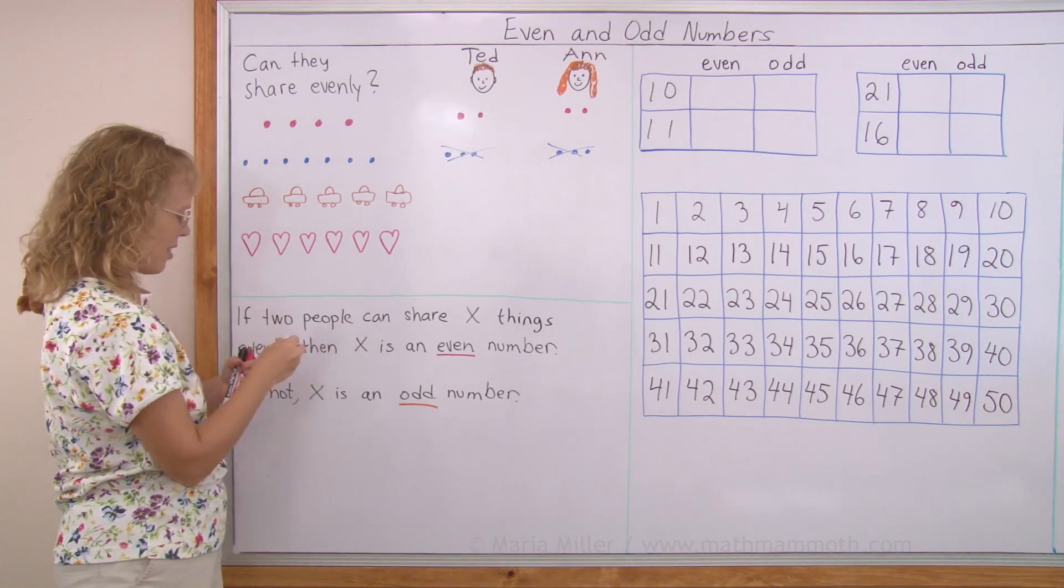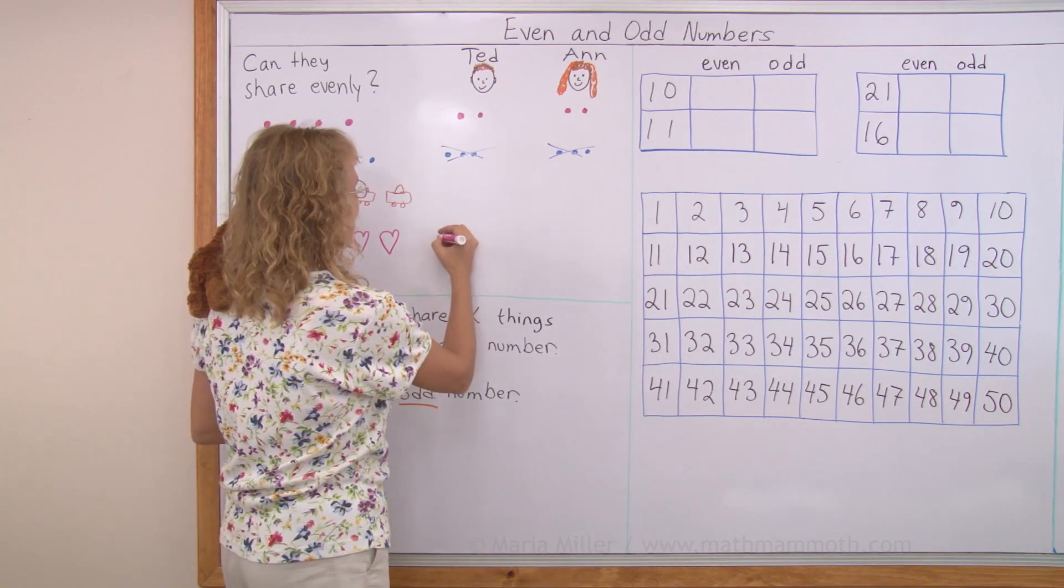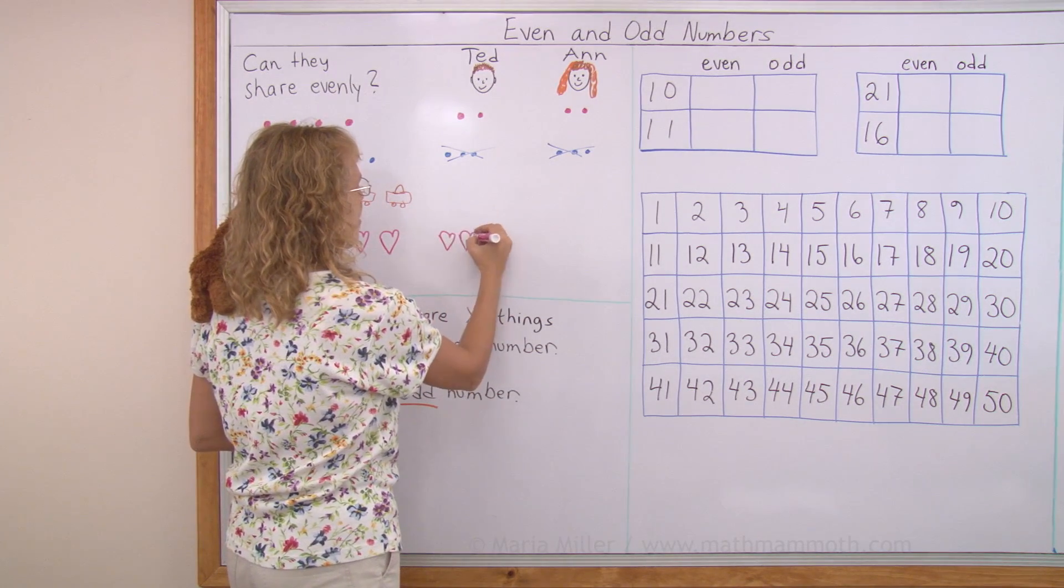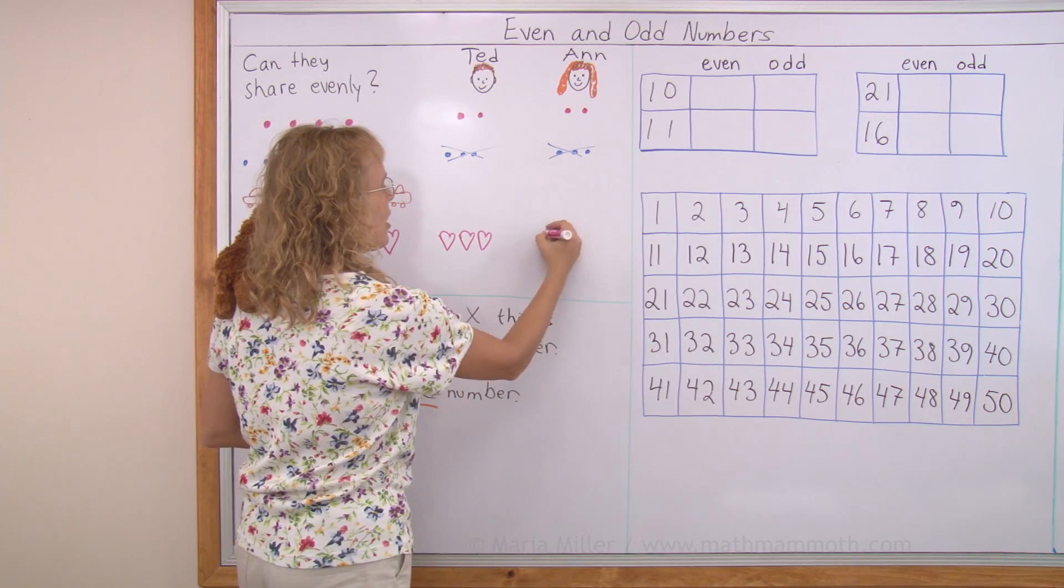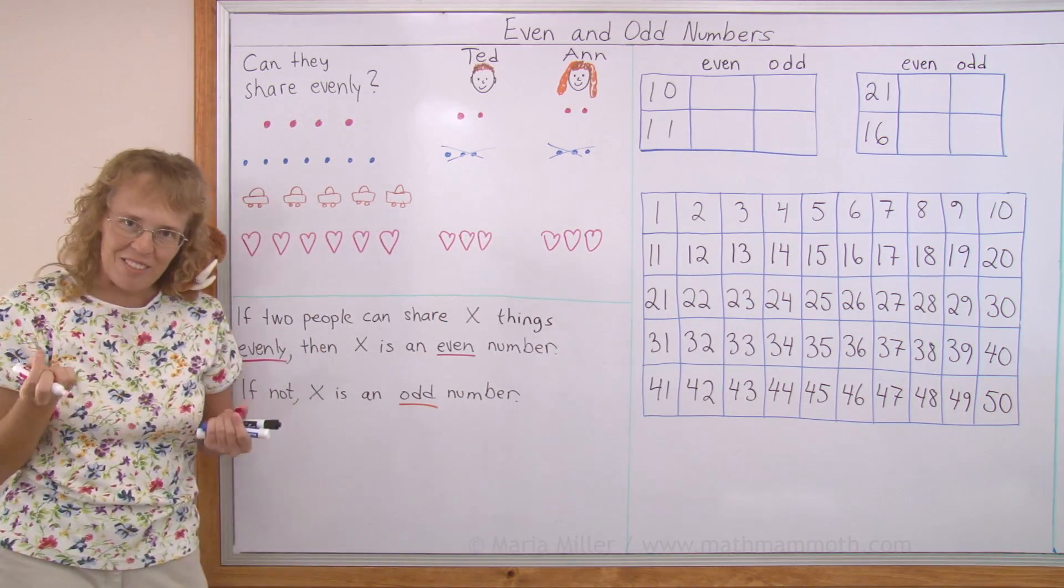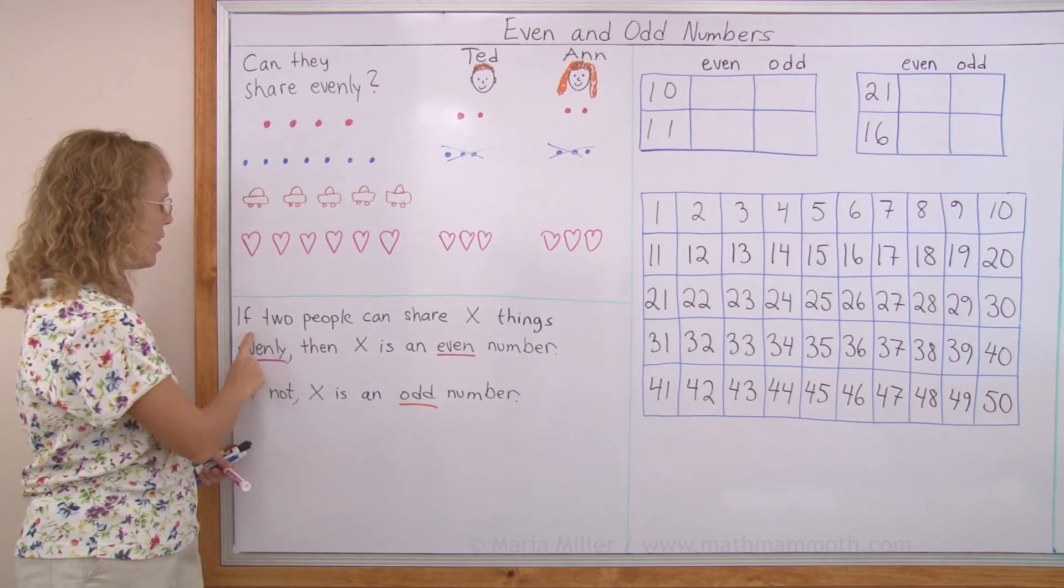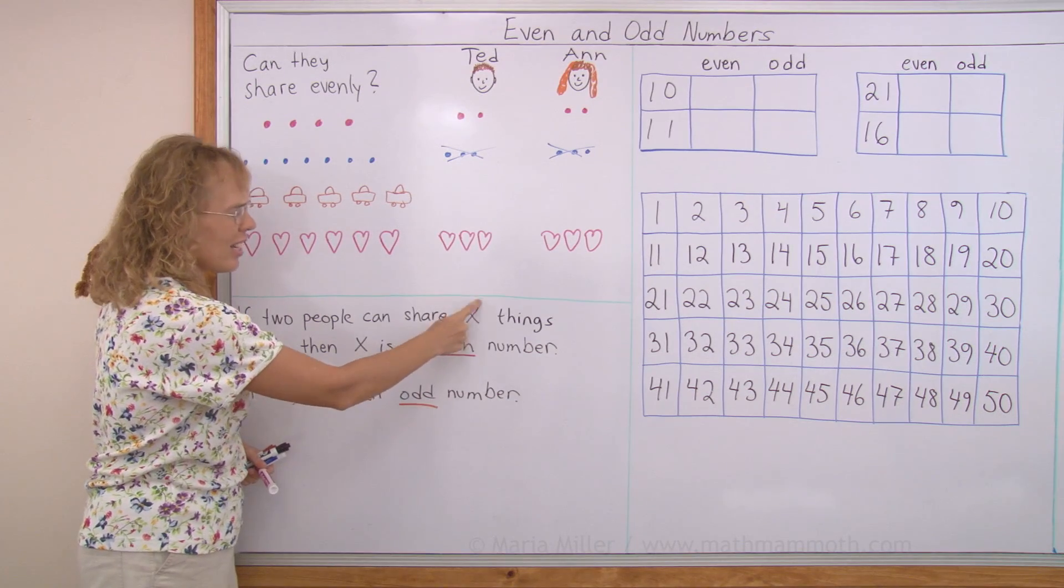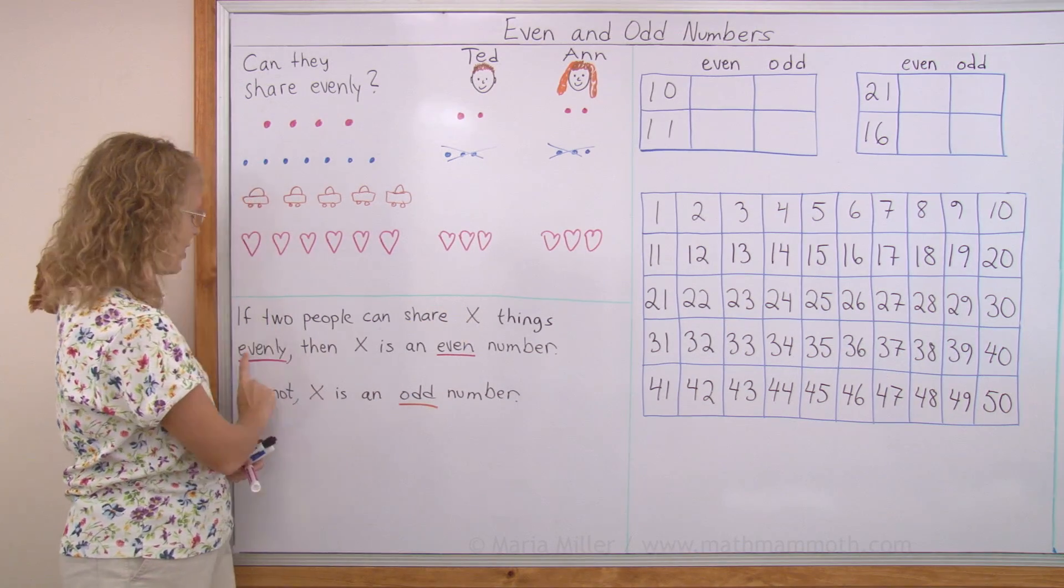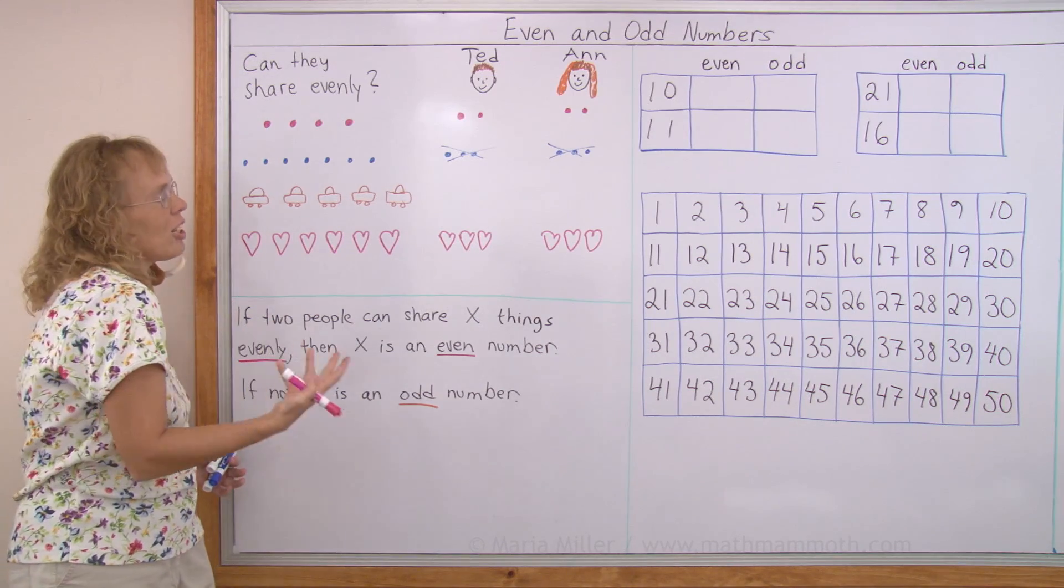Over here, six hearts. Can they share them evenly? This time it works out just fine. Three here, and three here, right? A total of six. So, six is an even number. If you can share evenly, it's an even number. If two people can share x things, this is like any number here, x things evenly, then x is an even number. If not, x is an odd number.